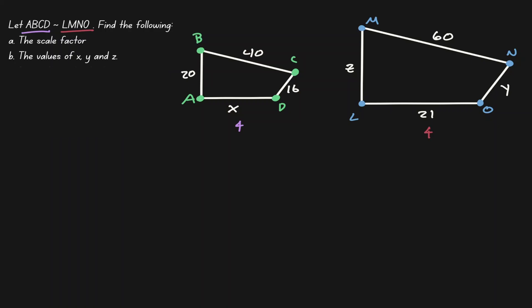Notice that we know they're similar because of the notation we have here — it's a squiggly line. Given that these two figures are similar, there must be a scale factor. Let's find the value of that scale factor.